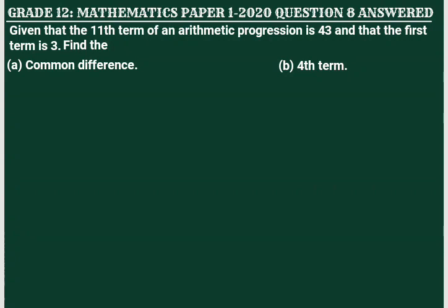Question number 8: given that the 11th term of an arithmetic progression is 43 and that the first term is 3. Find: a) the common difference, b) the fourth term.